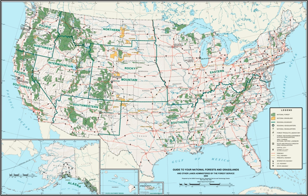As of September 30, 2007, the total area of all 20 national grasslands was 3,838,280 acres.